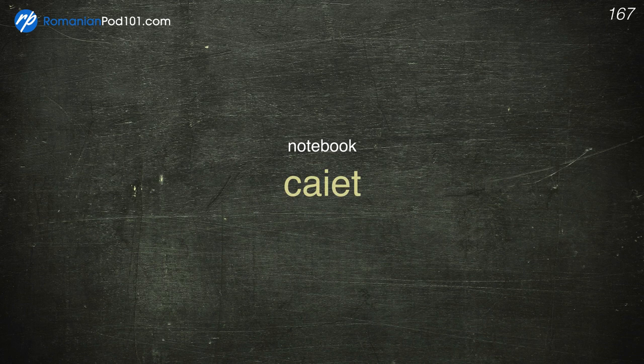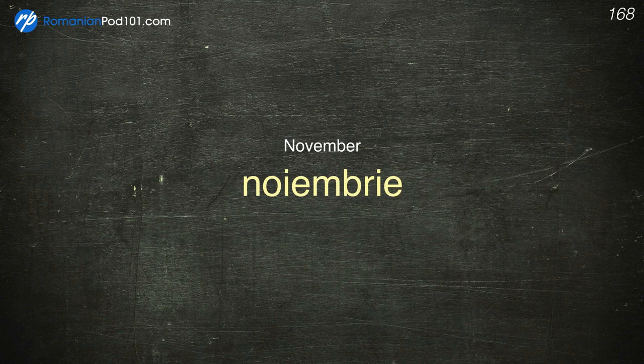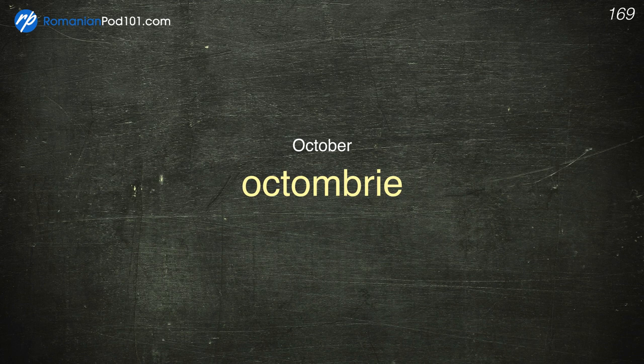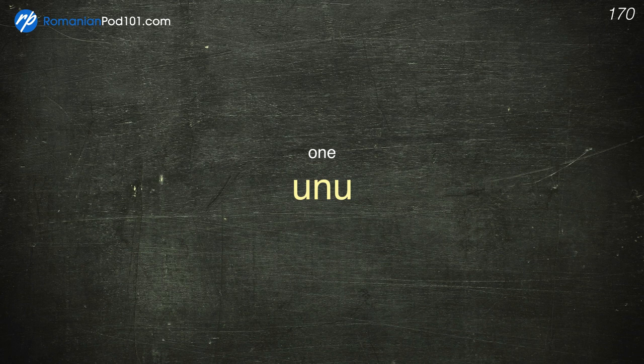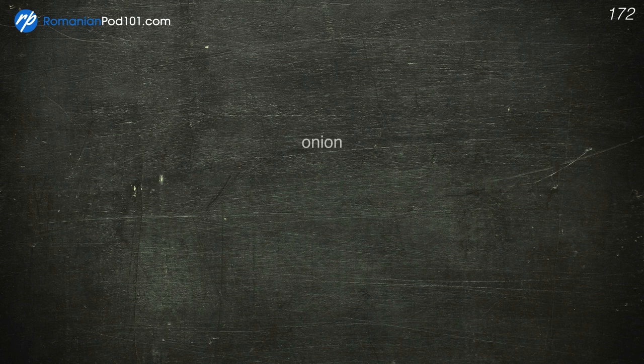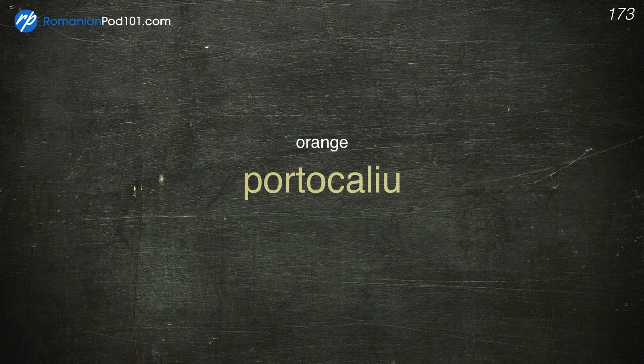Notebook — Caiet. November — Noiembrie. October — Octombrie. One — Unu. One hundred — O sută. Onions — Ceapă. Orange — Portocaliu.